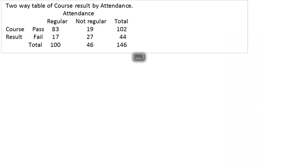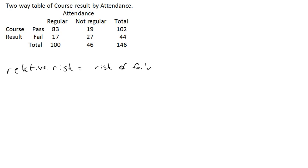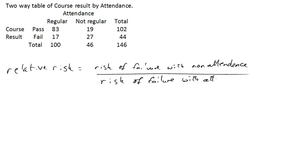We worked out the relative risk of failure was the risk of failure with non-attendance divided by the risk of failure with attendance. The top one was 27 out of 46 and the bottom one is 17 out of 100.